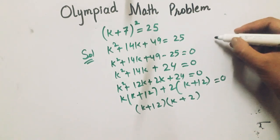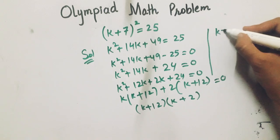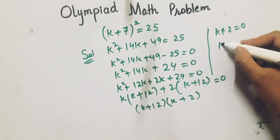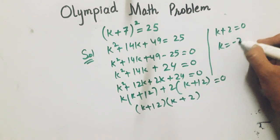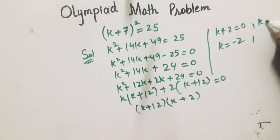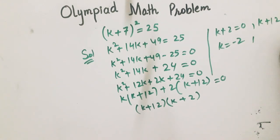So now we will take x plus 2 equals 0, which gives x equals minus 2. And x plus 12 equals 0, that means x equals minus 12.